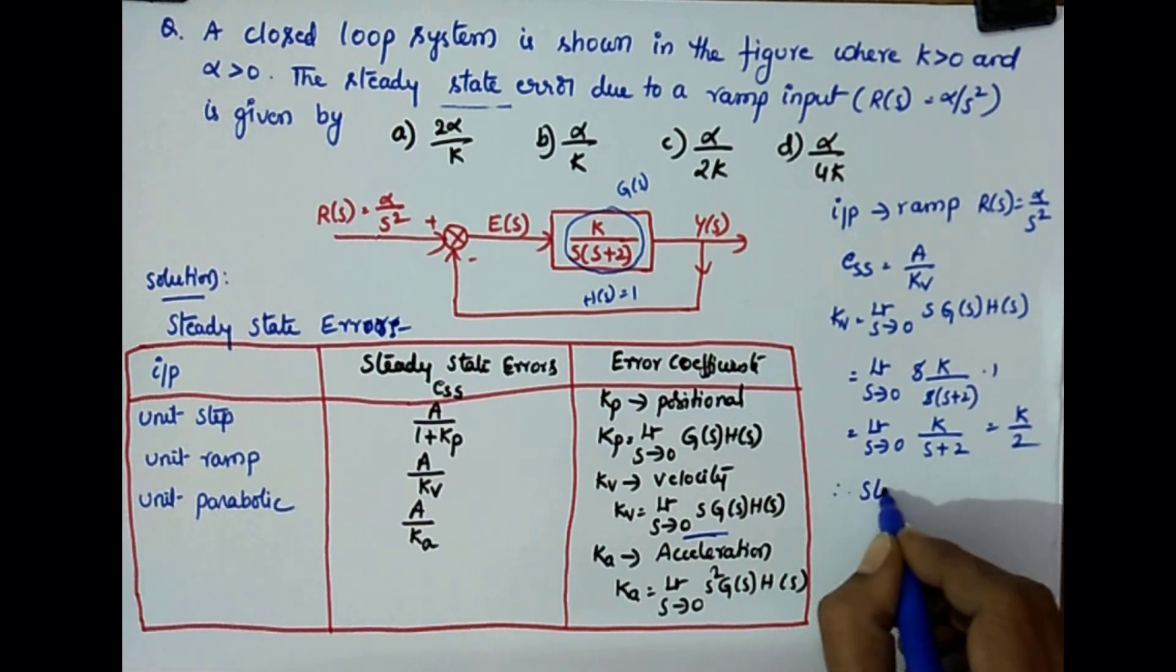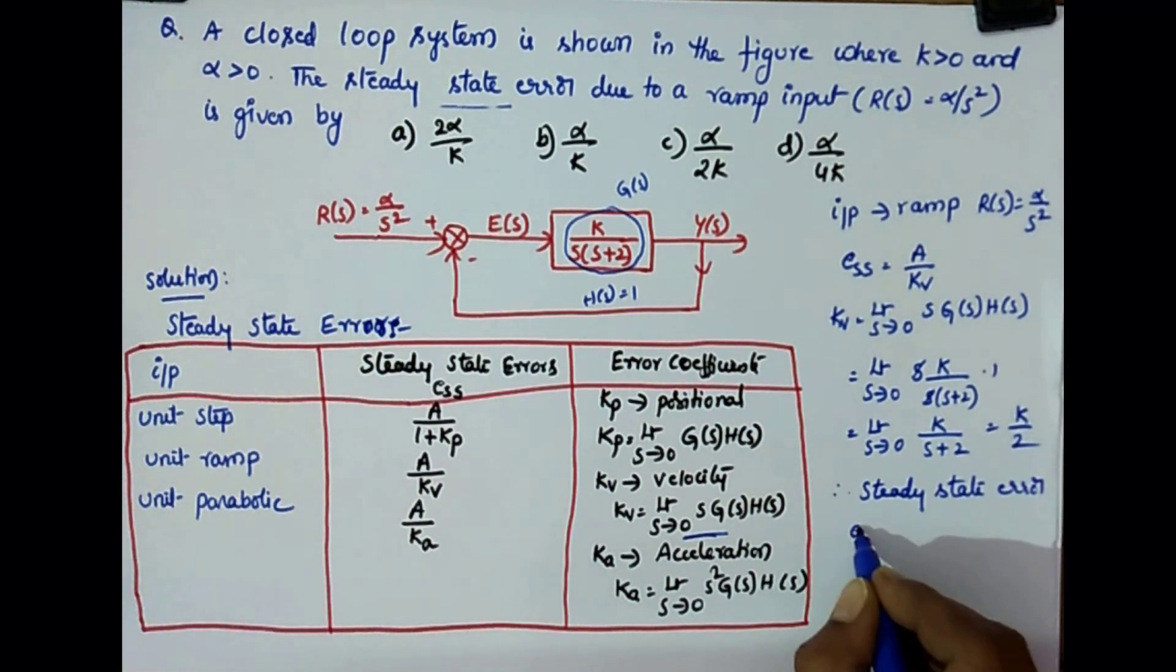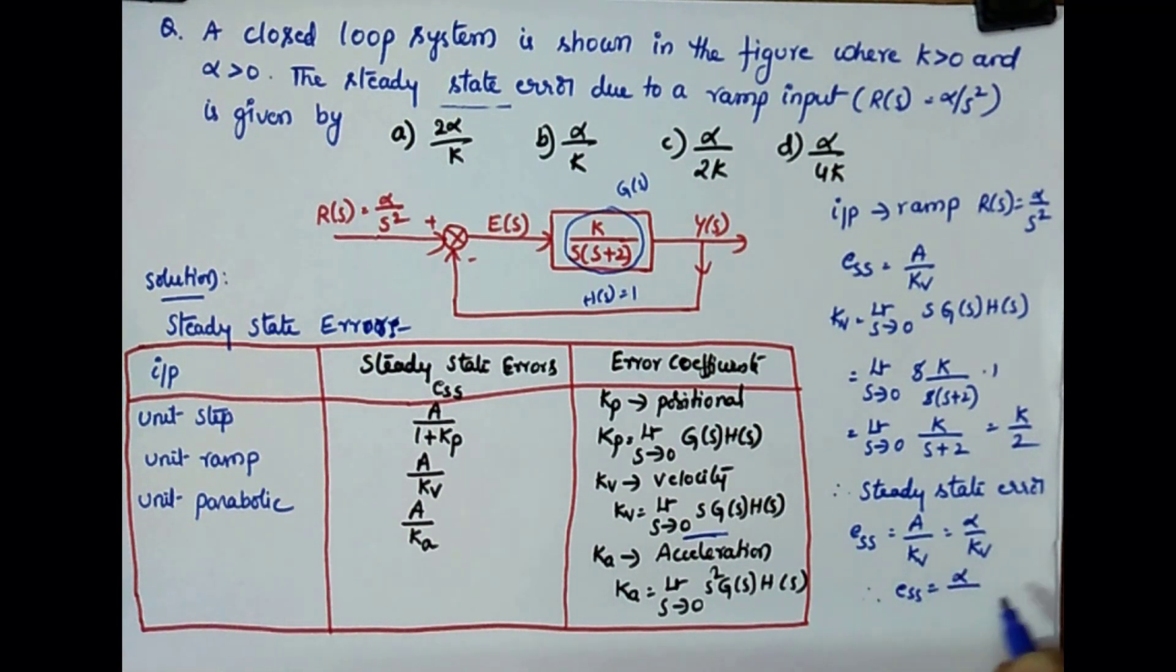Therefore the steady-state error, ESS, is A by Kv. For us the amplitude is alpha. So it is alpha by Kv. Kv is K by 2. So if you substitute, it will get totally ESS as 2 alpha by K.